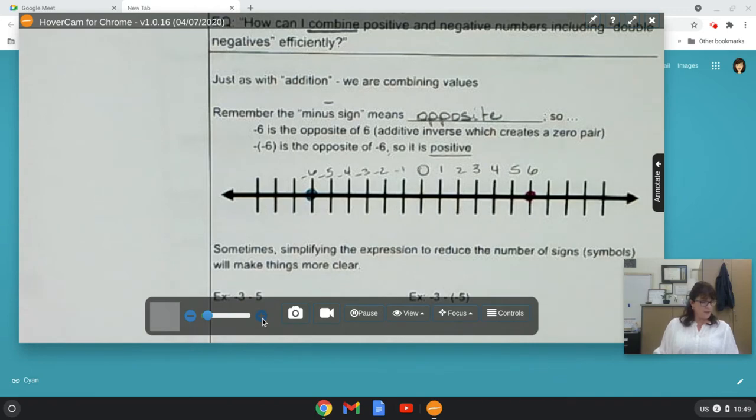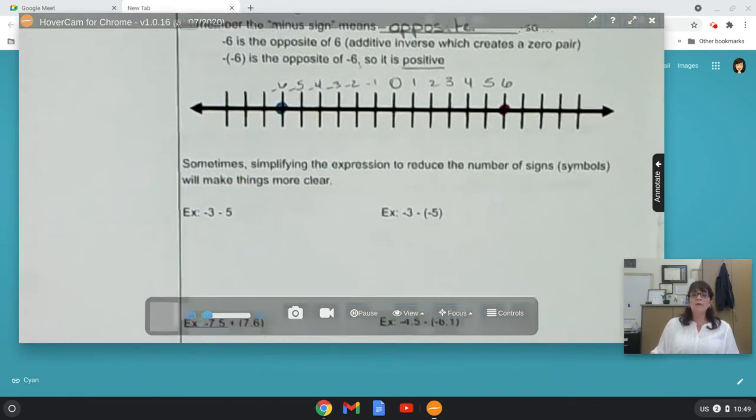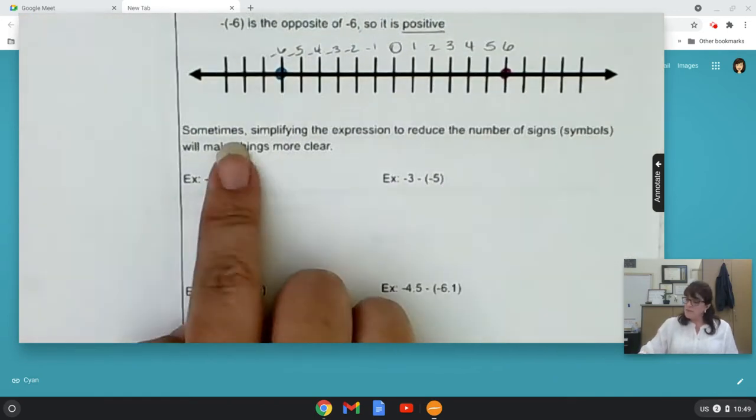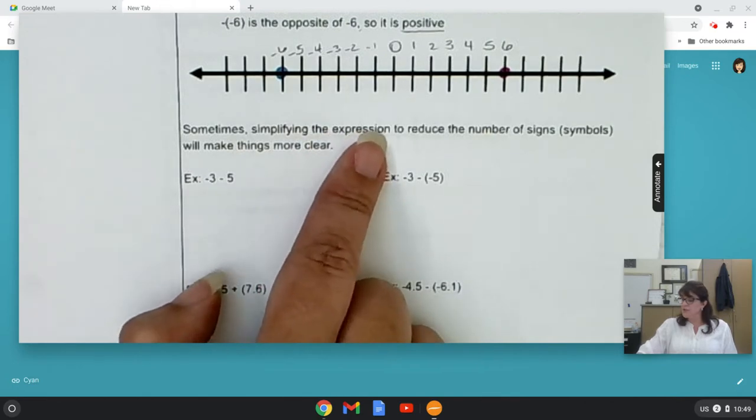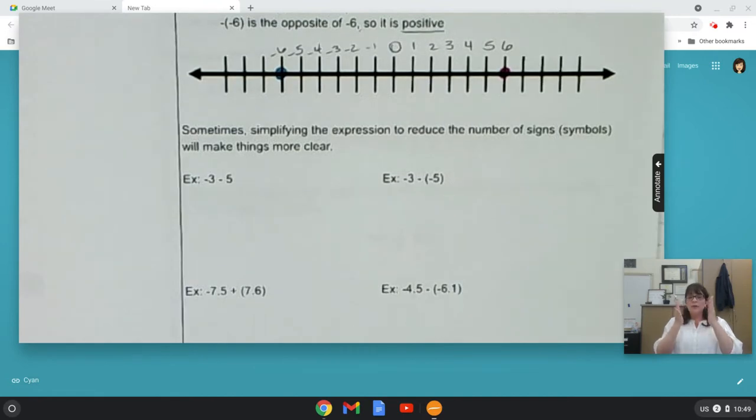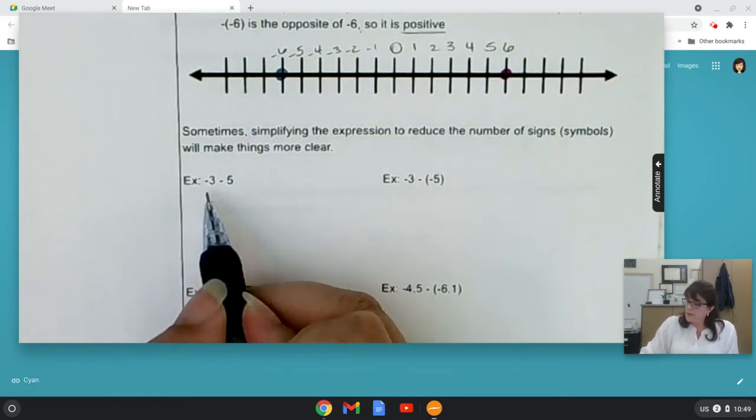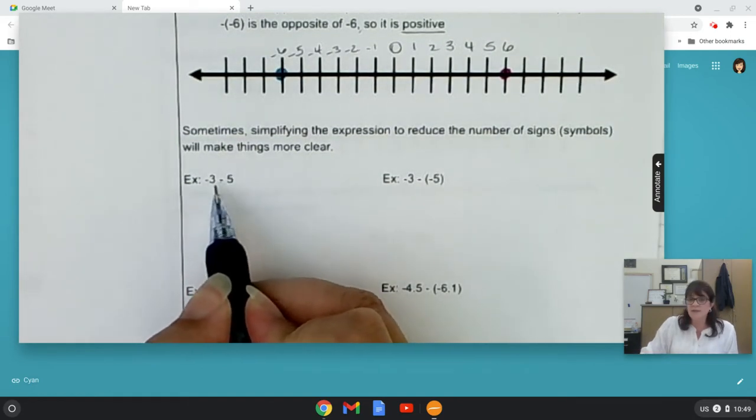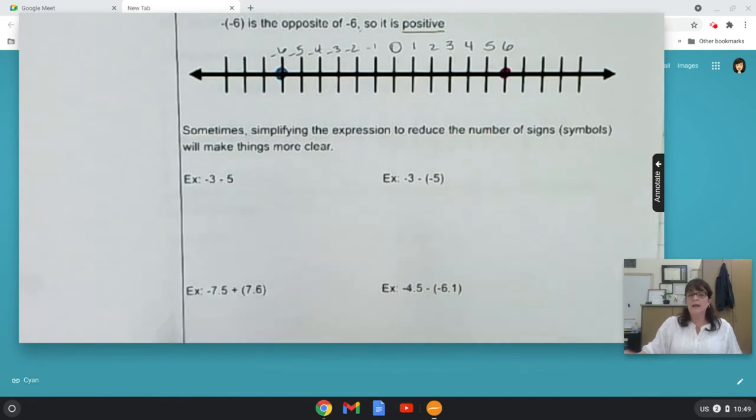Now, my advice. Sometimes, simplifying the expression to reduce the number of signs or symbols will make things more clear to you. So, let's take a look at just this first one. Negative three minus five. Or negative three and negative five. We're combining them.